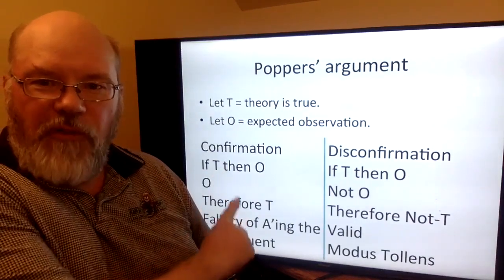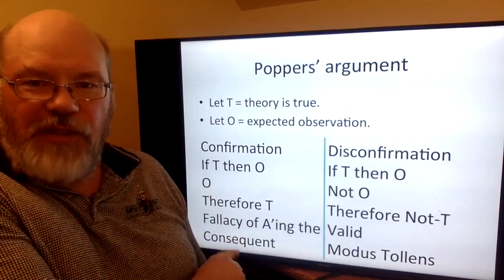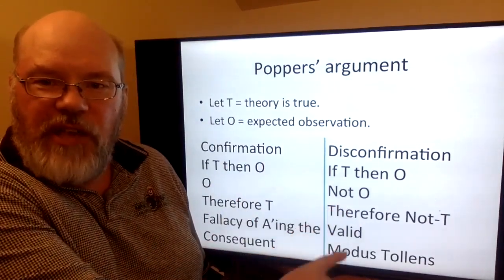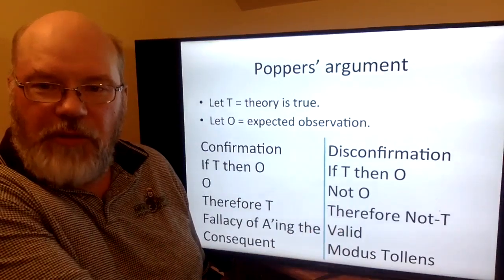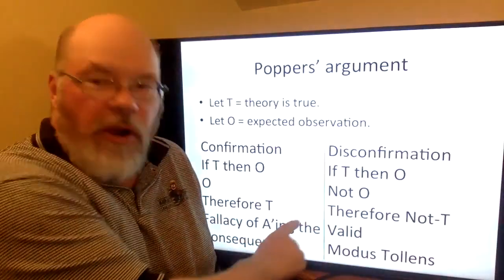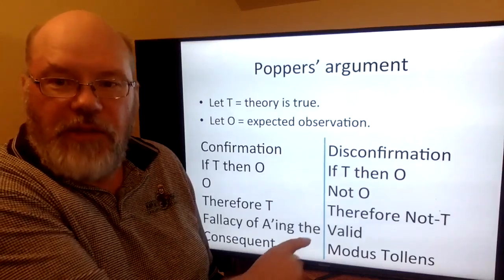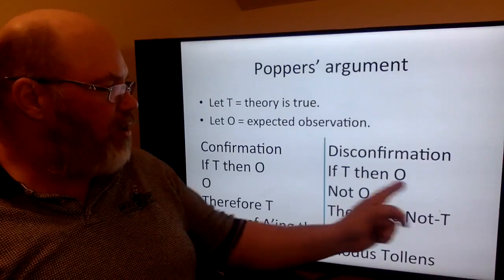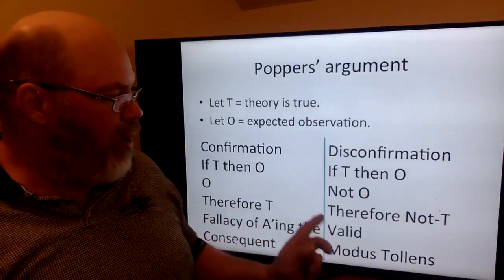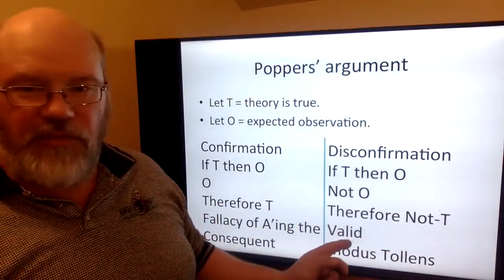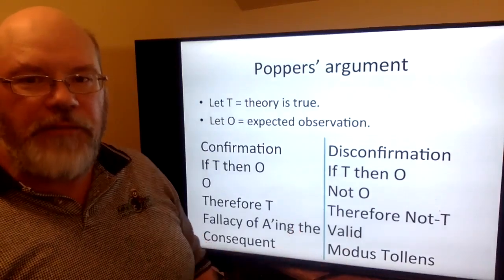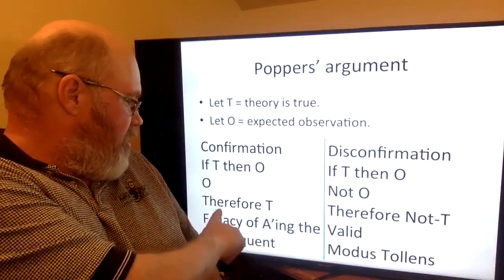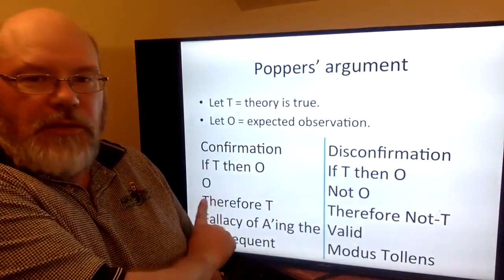The confirmation case is a fallacy of affirming the consequent. The disconfirmation case is a valid argument — we call that modus tollens, or denying the consequent. Antecedent, consequent — the consequent is not true, therefore the antecedent is not true. That's a valid argument. Affirming the consequent? Not so much.